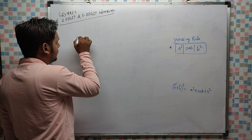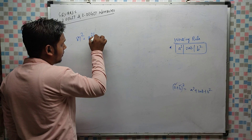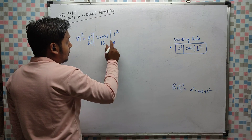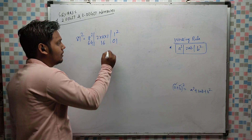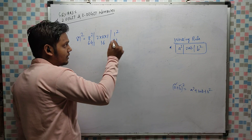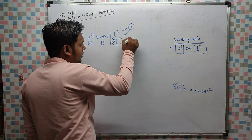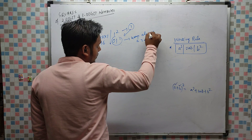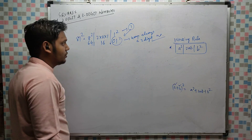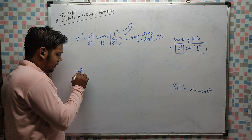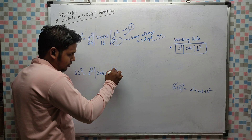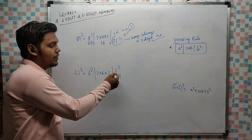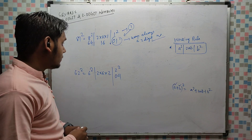Suppose 81². So: 8² = 64, 2×8×1 = 16, 1² = 1. Important rule: for balancing we need at least two digits in each position, so if a square gives a one-digit result, put a 0 before it. Write 01 for 1². Always keep a two-digit number in that position. Similarly for 62²: 6² = 36, 2×6×2 = 24, 2² = 04 — write 04.